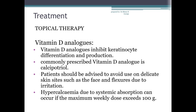In topical therapy, the first-line treatment of mild to moderate psoriasis should include an emollient as well as a topical treatment. The first topical agent is vitamin D analogues, which inhibit keratinocyte differentiation and production. The commonly prescribed vitamin D analogue is calcipotriol, available as lotion, ointment, cream or scalp treatment. Efficacy is enhanced when combined with a topical steroid. Patients should avoid delicate skin sites due to irritation risk, and hypercalcaemia can occur if the maximum weekly dose exceeds 100 grams.